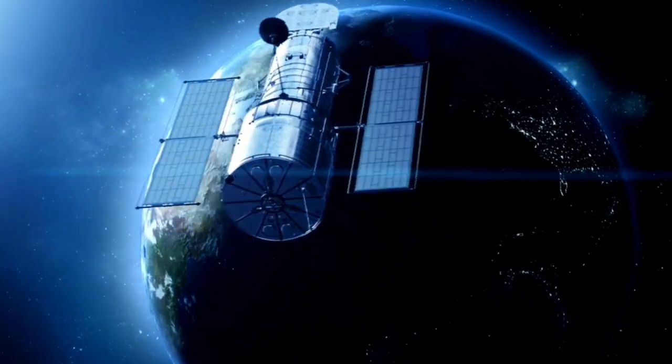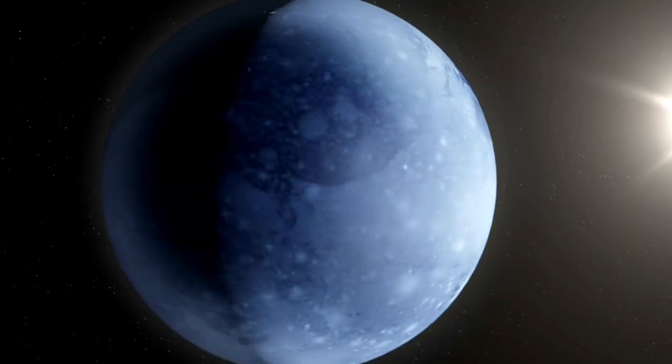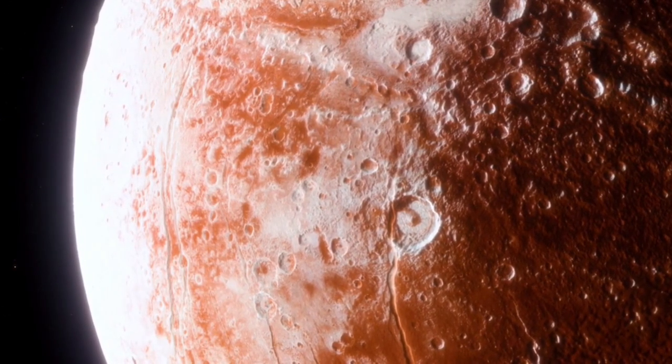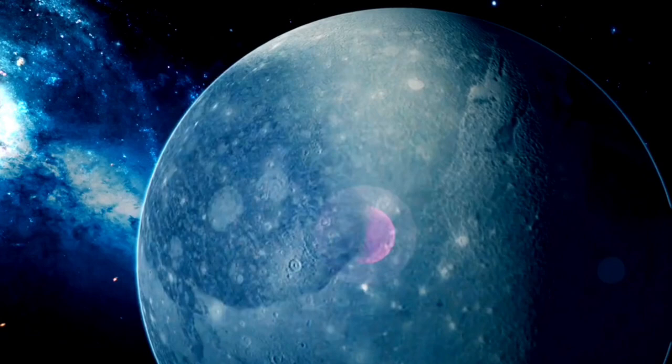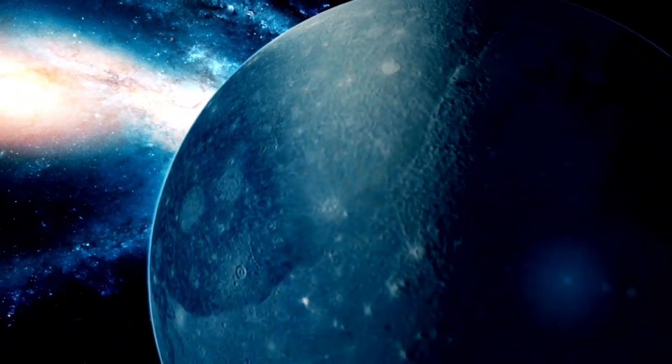While computer models show the stability of Pluto's orbit over billions of years, they also reveal just how sensitive these configurations are to disruption. A single perturbation, small and subtle, could break the harmony of the three-colon-two orbital resonance and send Pluto on a far more unpredictable path.